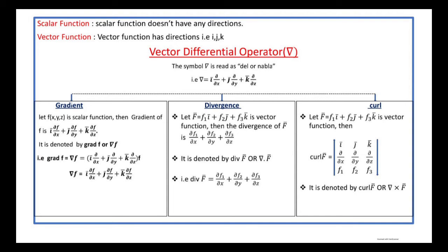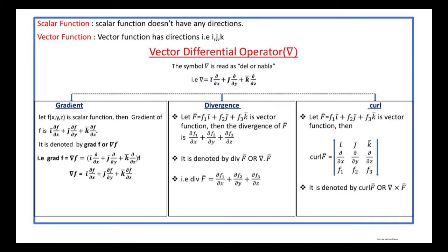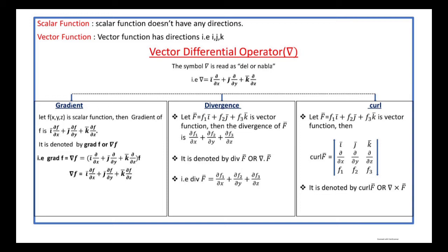Hi everyone. Here I would like to explain gradient, divergence, and curl. I already explained scalar functions and vector functions in my previous video. A scalar function doesn't have any direction, but a vector function has directions — that is, i, j, k.